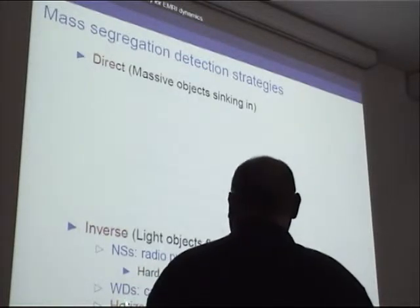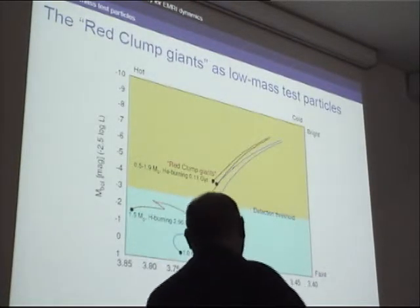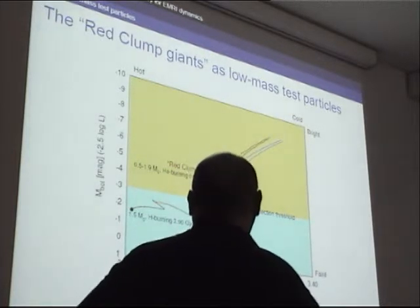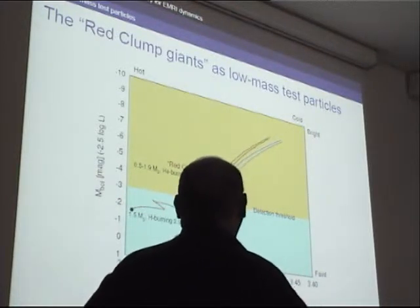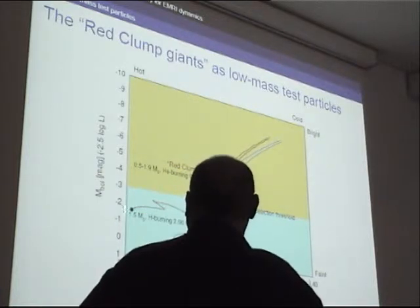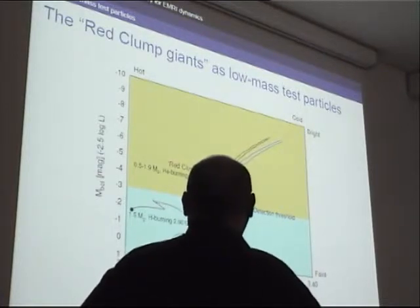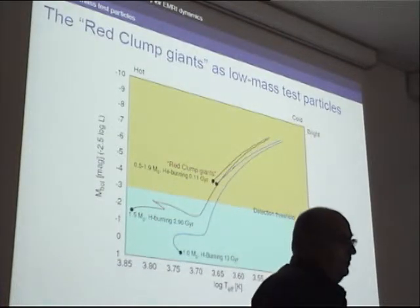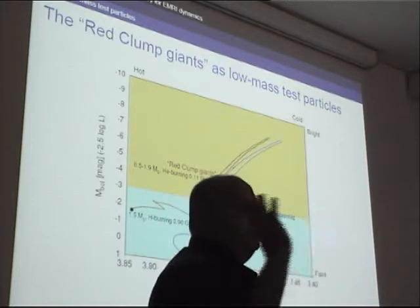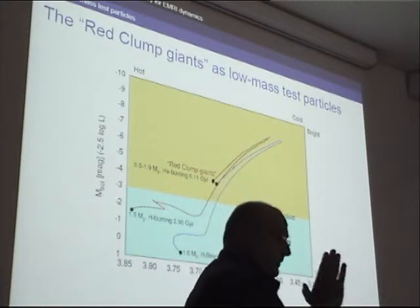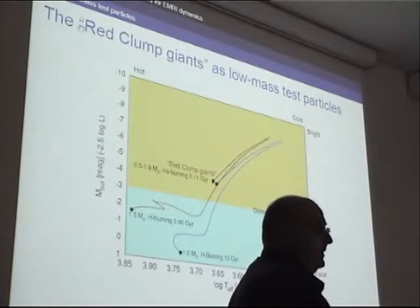The complementary approach — looking for the light objects that were driven out — uses what are known as horizontal branch red clump giants. These are stars between about half a solar mass and two solar masses, which spend their lifetime at low luminosities under the detection threshold, burning their hydrogen. But once they reach the stage of helium burning, they all congregate at one point on the temperature-luminosity plot and therefore are a very prominent feature even if you only have luminosity information. Spectroscopy is still very difficult in the galactic center, so we work mainly with luminosity.